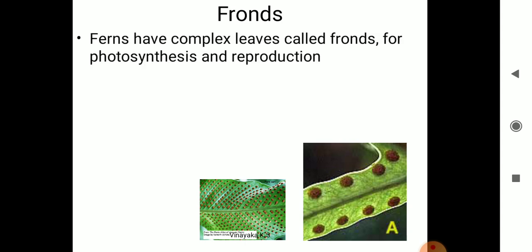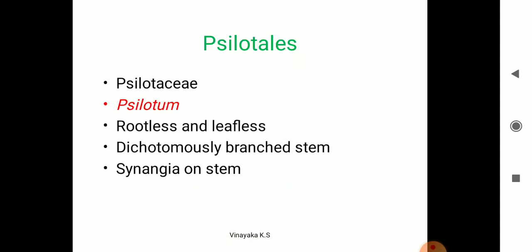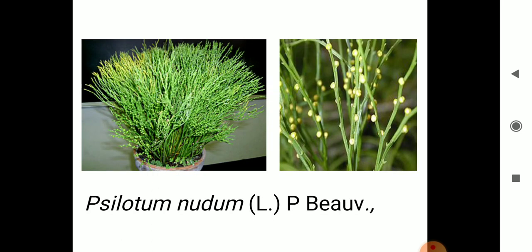Coming to the classification: pteridophytes are divided into different classes. The first class is Psilotales, family Psilotaceae, example Psilotum. Psilotum is simply called a rootless and leafless pteridophyte. They have dichotomous branching and bear synangia. In Psilotales there is no root or leaf like other pteridophytes; branching is dichotomous and synangia are present.